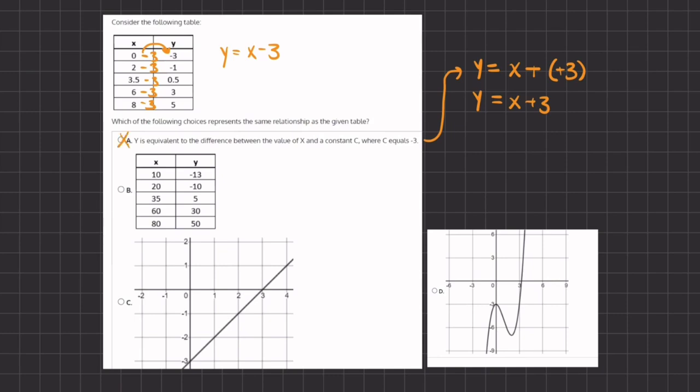Now let's take a look at b. We have another table given with the values of x and y, and so let's see if our pattern continues here. If we do x, the value of x, which is 10, minus 3, we should get a 7, but here we are getting a negative 13. As you can tell, this pattern does not continue, and therefore, b is also eliminated.